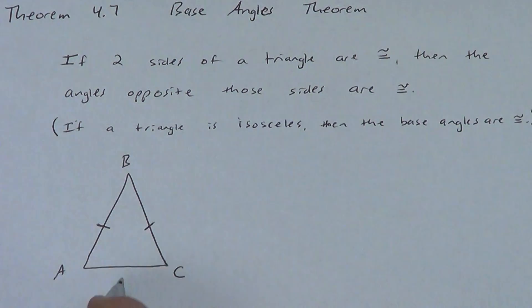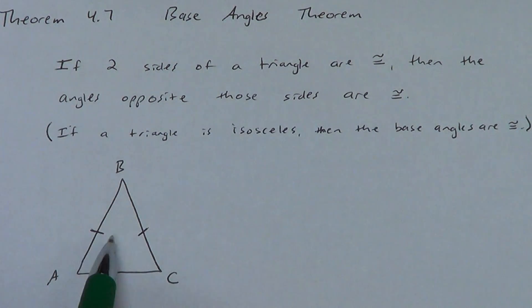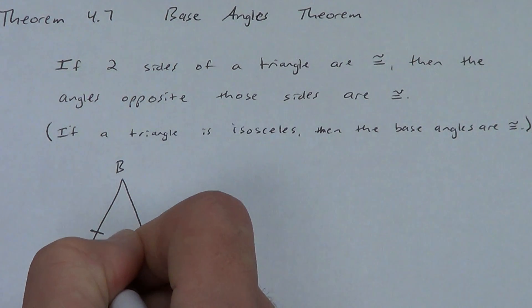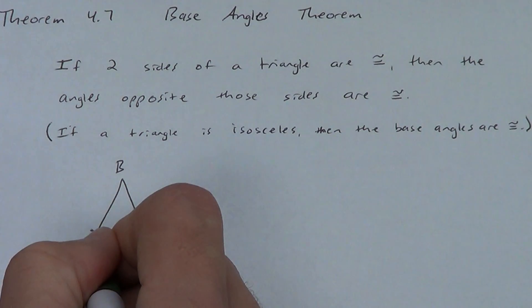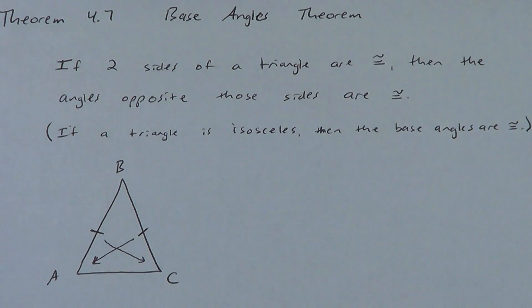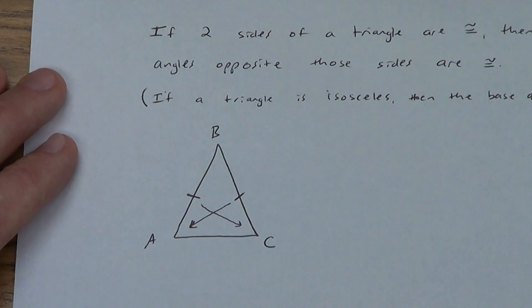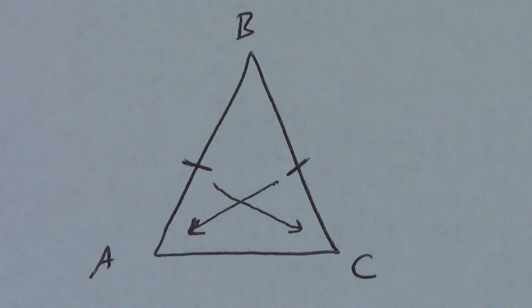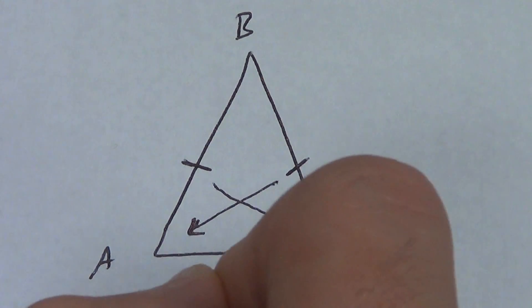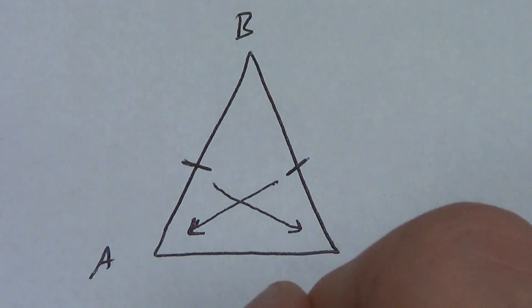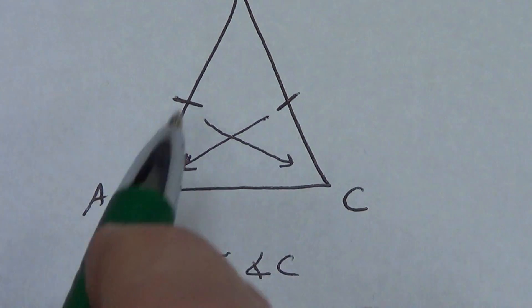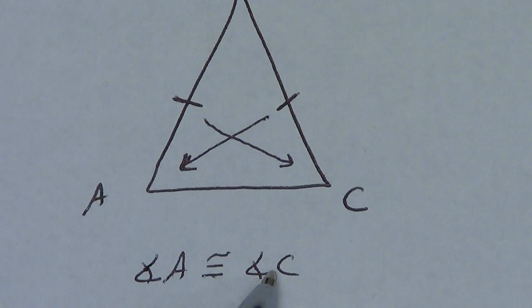So we've got leg, leg, base, base angle, base angle. The theorem says if two sides of a triangle are congruent, then the angles opposite those sides are congruent. The easiest way to figure out which angles is to literally just draw an arrow across the triangle and draw another arrow across the triangle — it's going to point right to the two congruent angles. Those arrows point to angle A and angle C, so angle A is congruent to angle C. If you have two congruent sides, then you also have two congruent angles — the ones across from the sides.